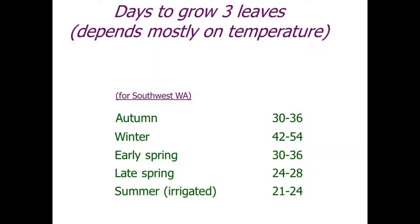The rotation speed is set by leaf emergence, and the leaf emergence rate is determined by temperature and sunlight. That changes during the growing season, which is why it's really important to do in-paddock assessments on leaf emergence and determine that leaf emergence rate, which sets our rotation speed.